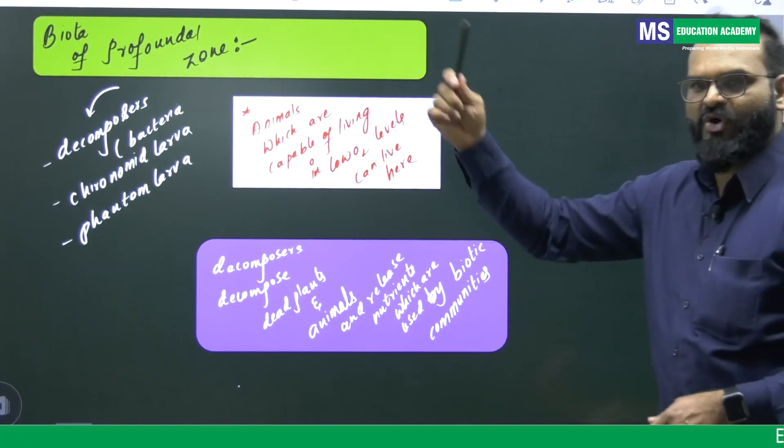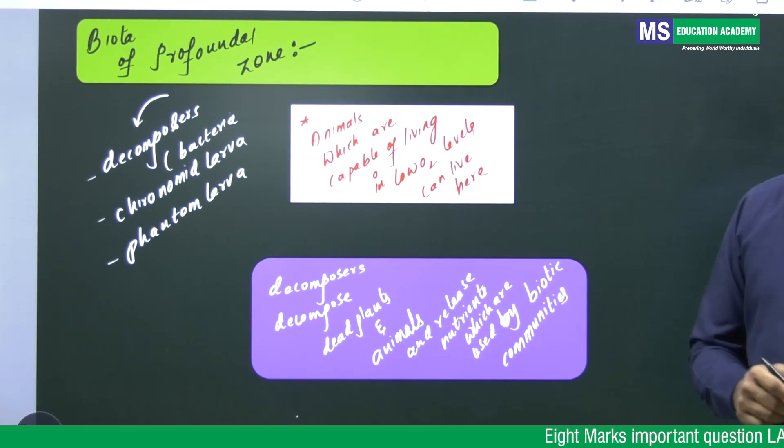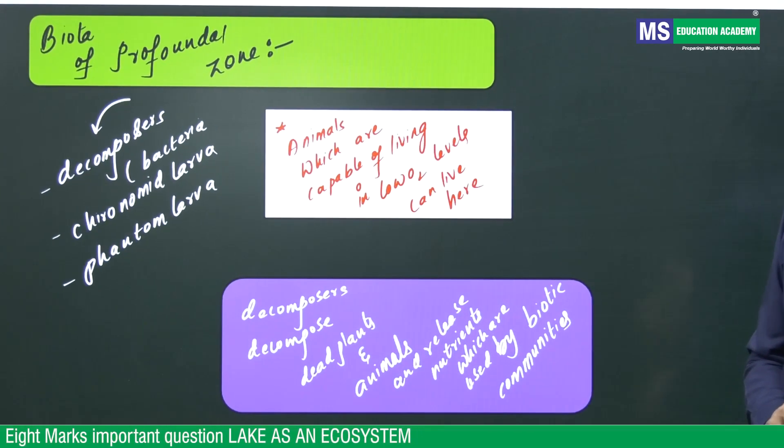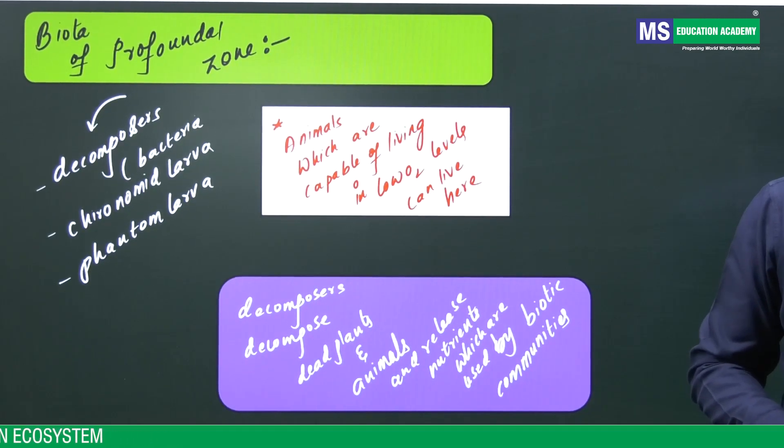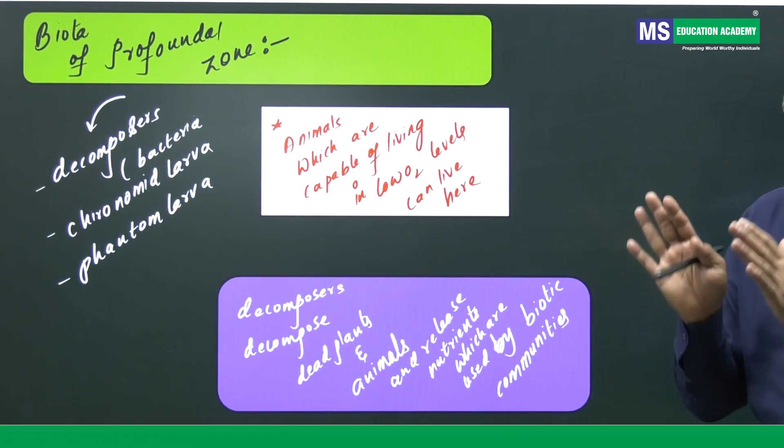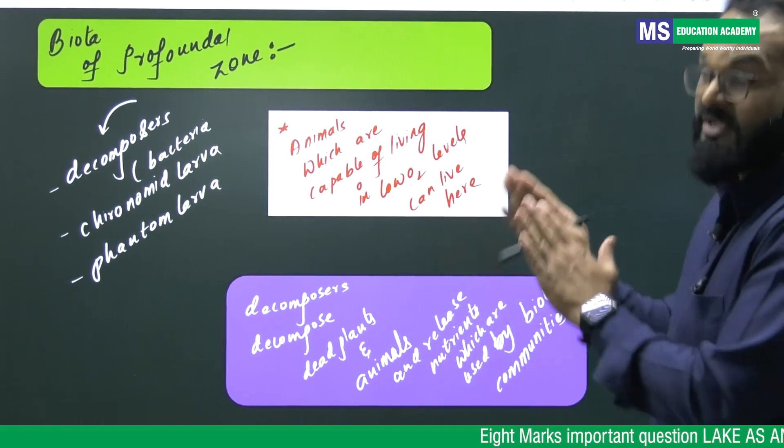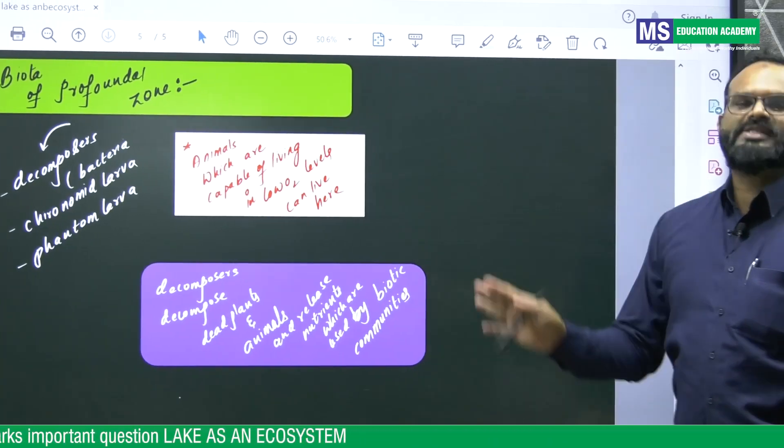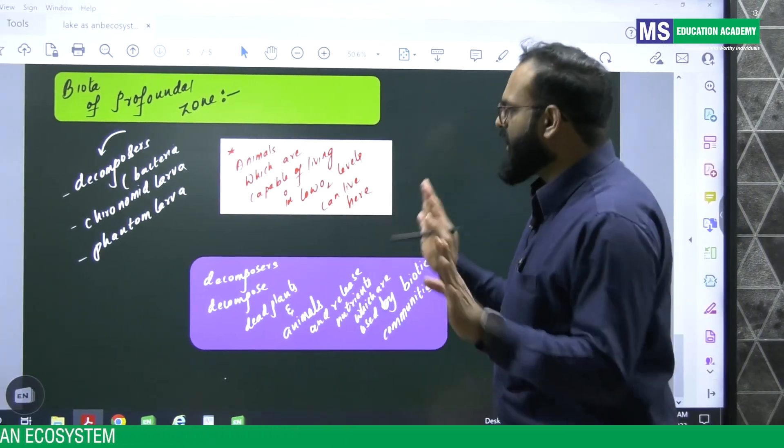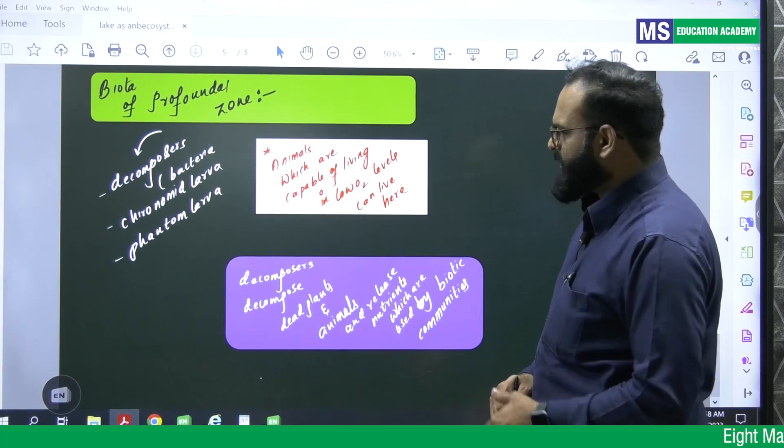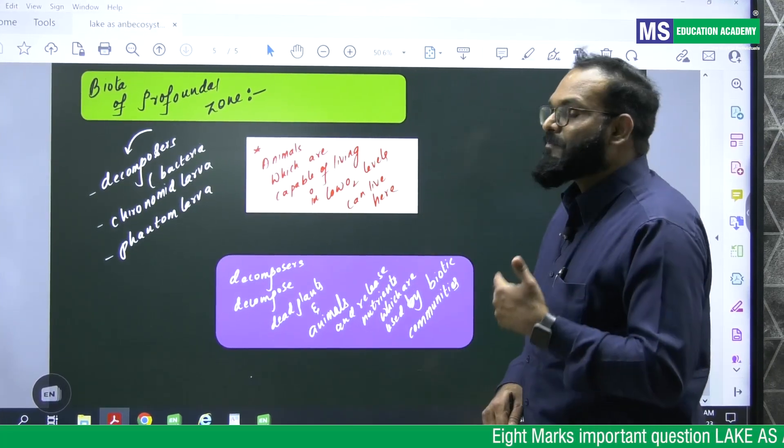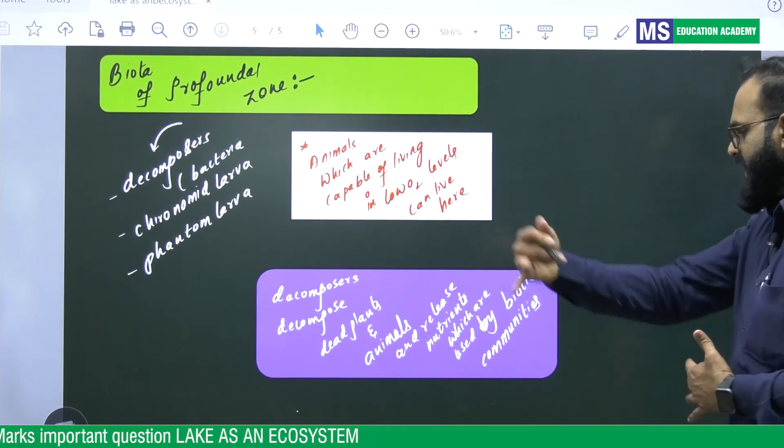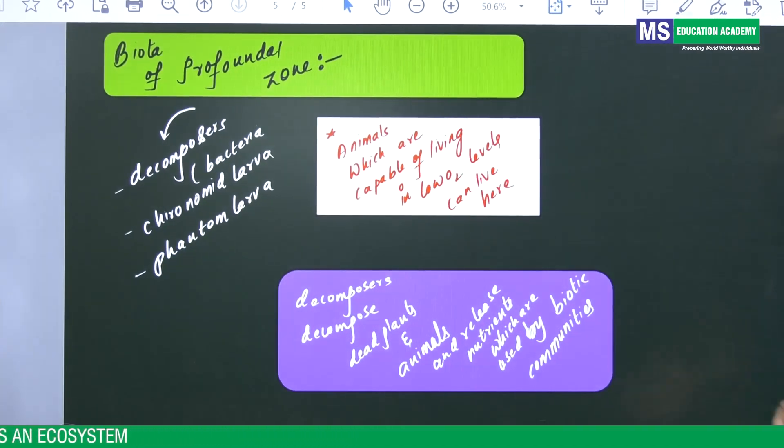Now coming to profundal zone which is a innermost zone, dark zone where oxygen is very less because lack of penetration of or availability of light in that area, no photosynthesis, obviously the amount of oxygen will be low in profundal zone. And students, the animals which can survive at very low oxygen levels only can be seen in profundal zone. Mostly decomposers are present, bacteria are present, some chironomid larvae are present, phantom larvae are present, mainly decomposers decompose dead plants and animals and release the nutrients which are used by biotic communities.